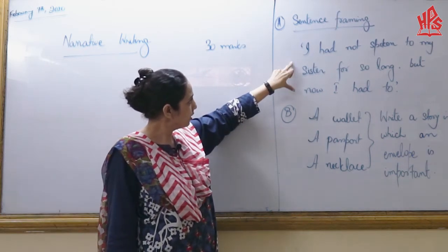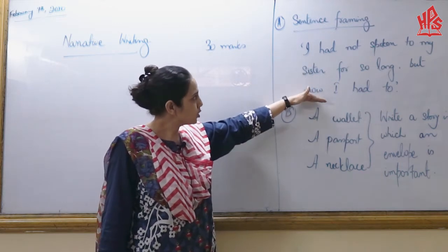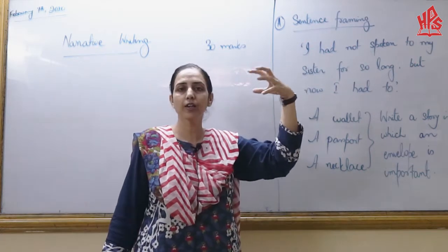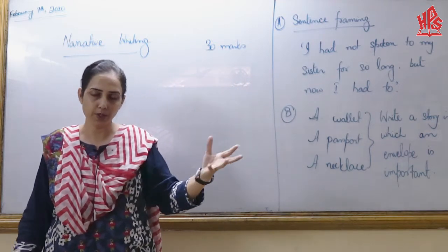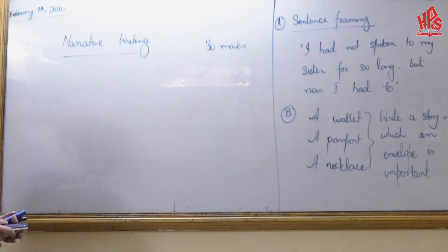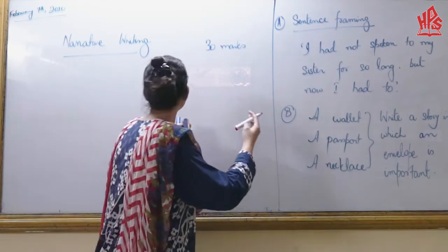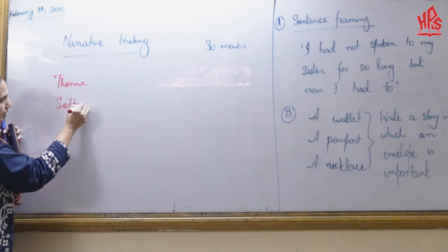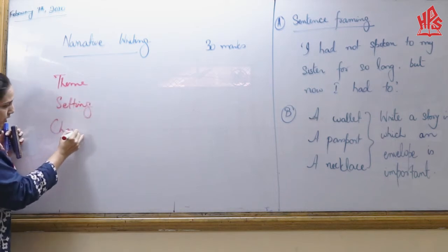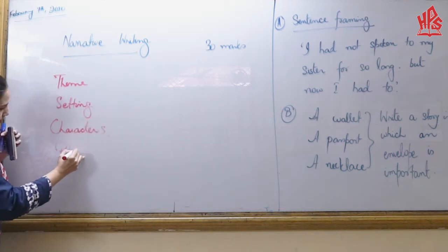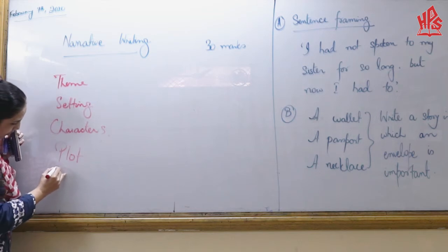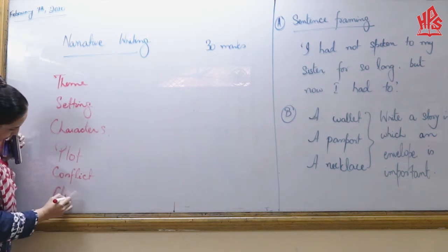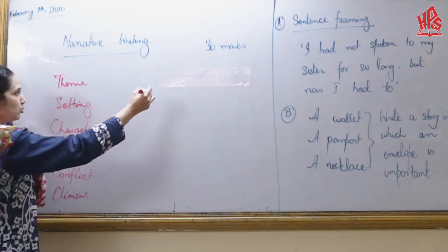By now you have seen this on the board, and I will be trying to weave something around it. The moment I see the sentence 'I have not spoken to my sister,' there should be some kind of a plot, a theme, or something that comes up with it. It's very important to see where you can fit it. We are talking about a theme, a setting, characters, a plot, a conflict, a climax, and a resolution.